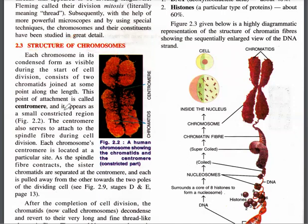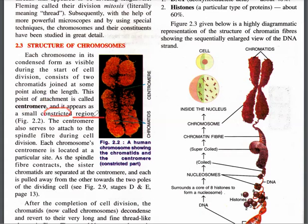Next is the structure of the chromosome — a very important part of this chapter. Each chromosome in its condensed form, as visible during the start of cell division, consists of two chromatids joined at some point along the length. This point of attachment is called the centromere, which appears as a small constricted region.